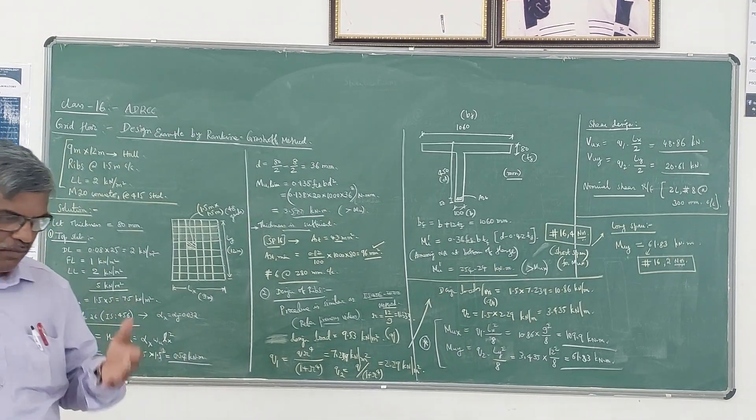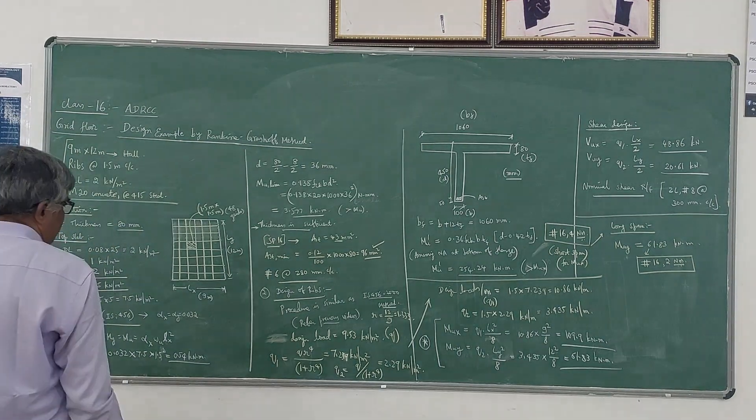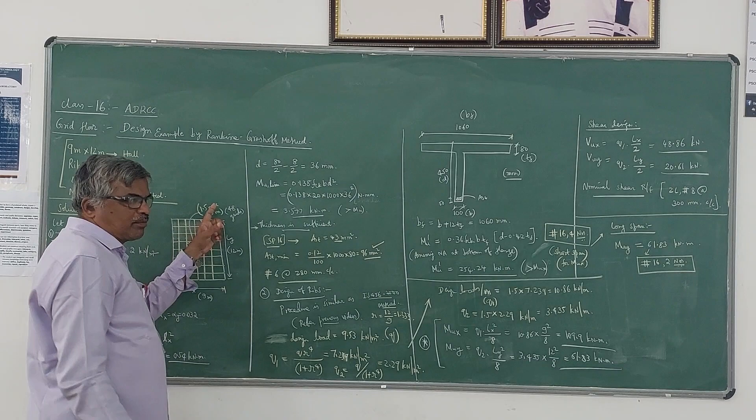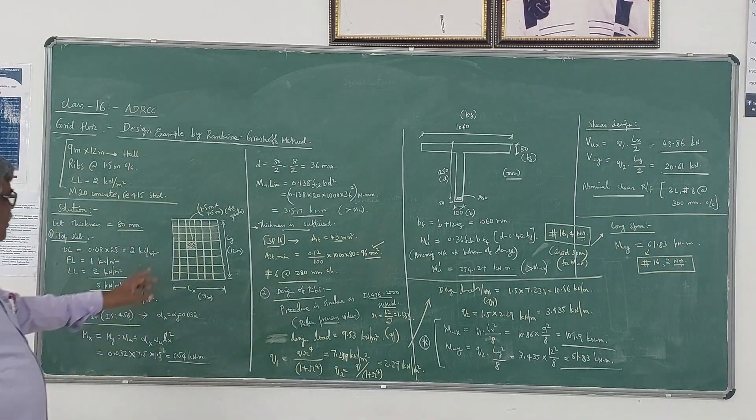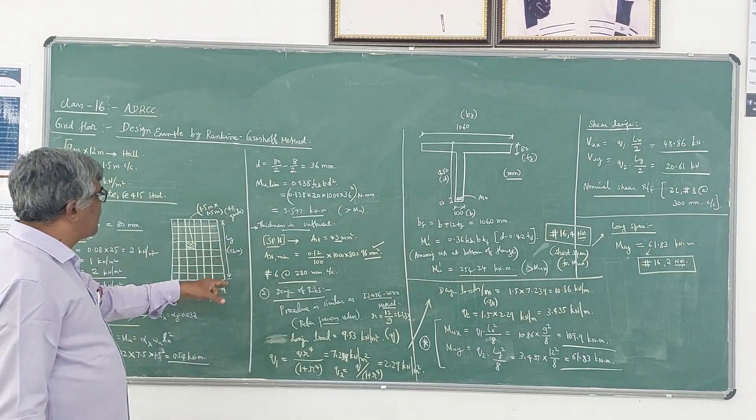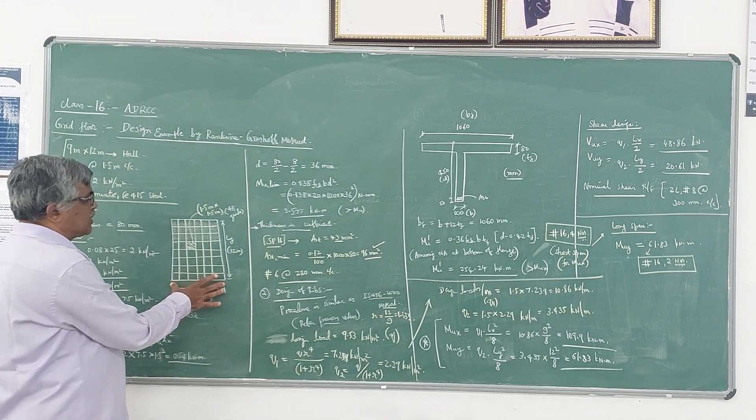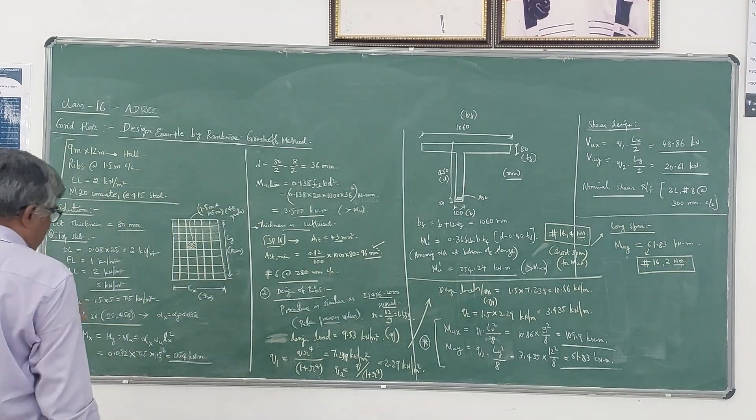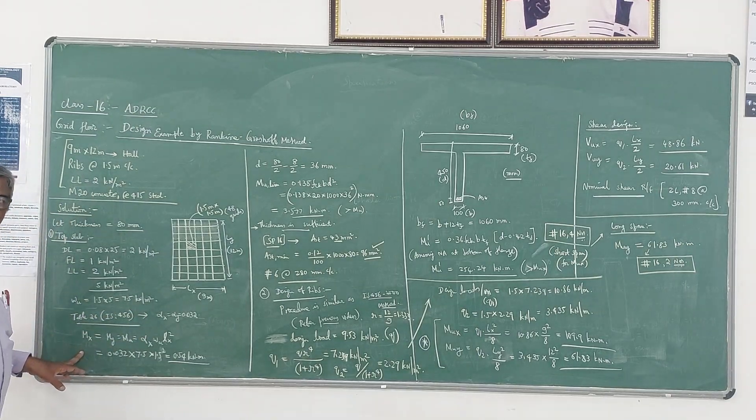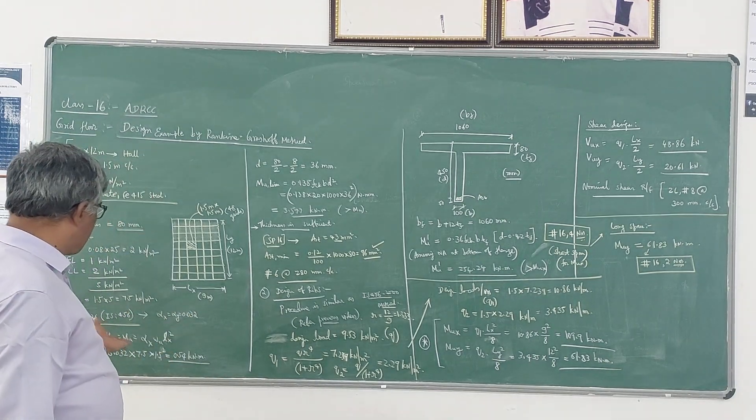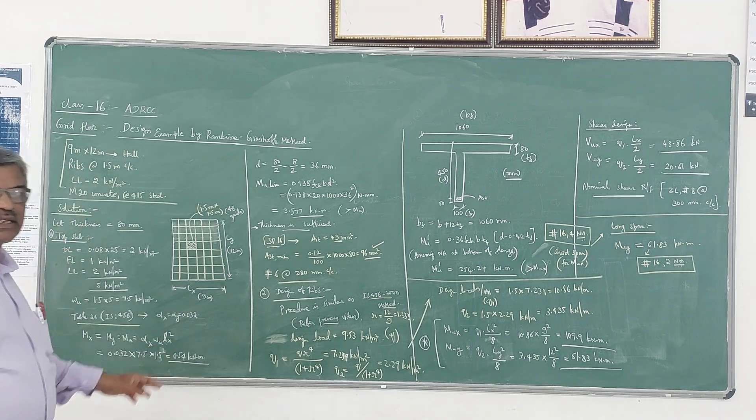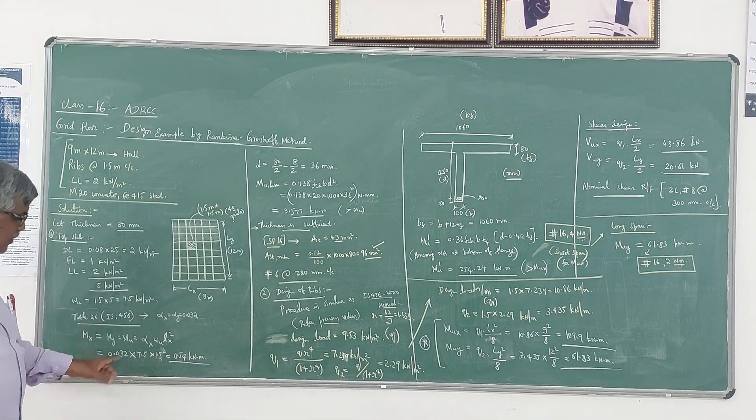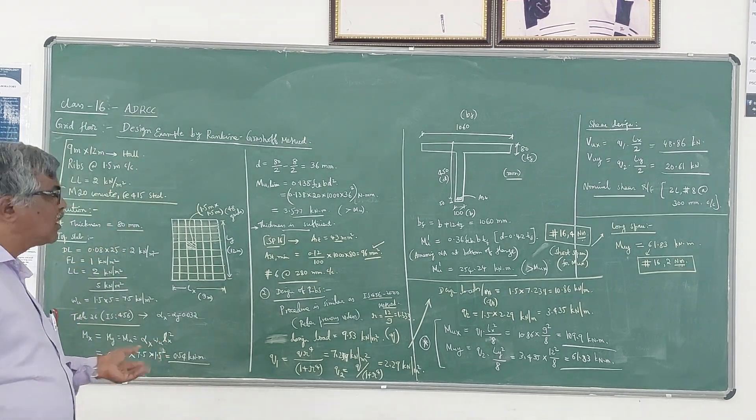From Table 26 available in IS456 for this edge condition of the slab, the moment coefficients will be the same. All edges are fixed, they are equal here because we are taking the 1.5 meter by 1.5 meter panel size. There are 48 panels like this - if you take the panel size of 1.5 meter, there will be 6 panels in this direction and 8 panels in this direction. From the moment coefficient, the maximum value comes to 0.032. If you multiply, you get 0.54 kilonewton meter.